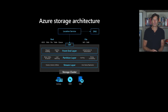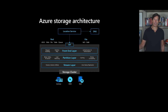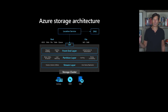On top, there are REST APIs for Azure Data Lake Storage, for blob APIs, for file APIs, for table and queue APIs. We also have support for NFS and SMB APIs on top as well. So all of this is built on top of the same stack, which means you get the same kinds of scalability out of all these APIs.